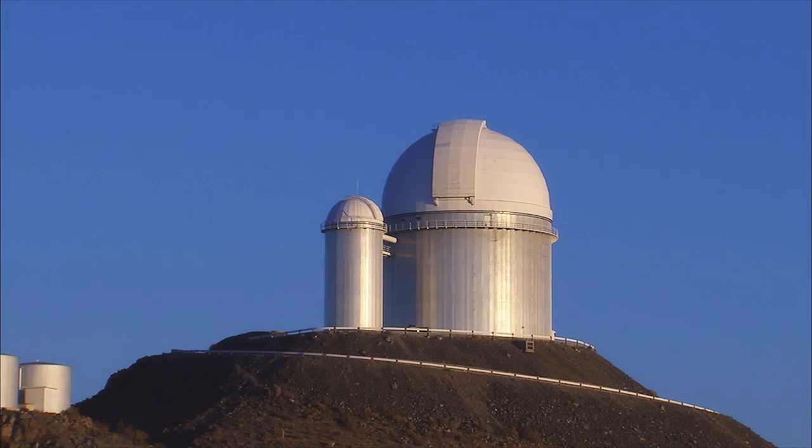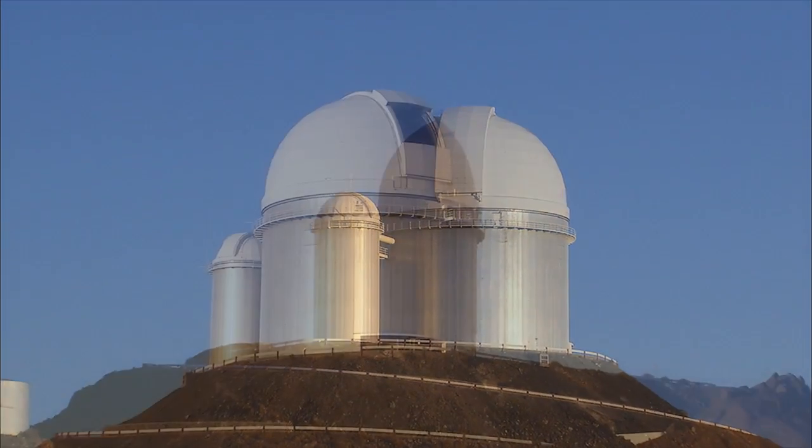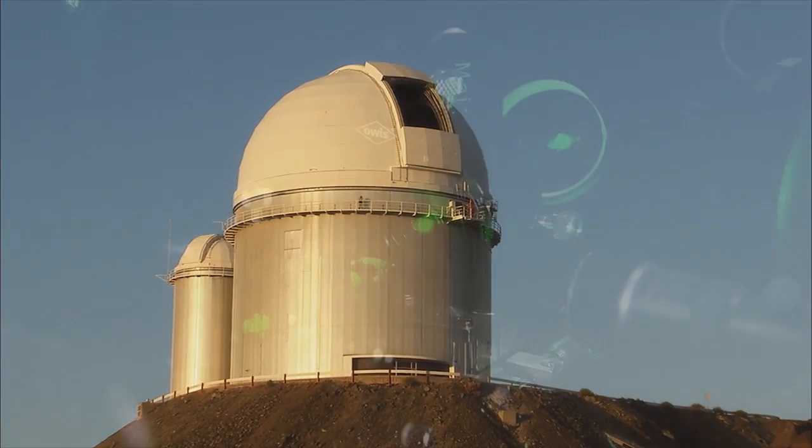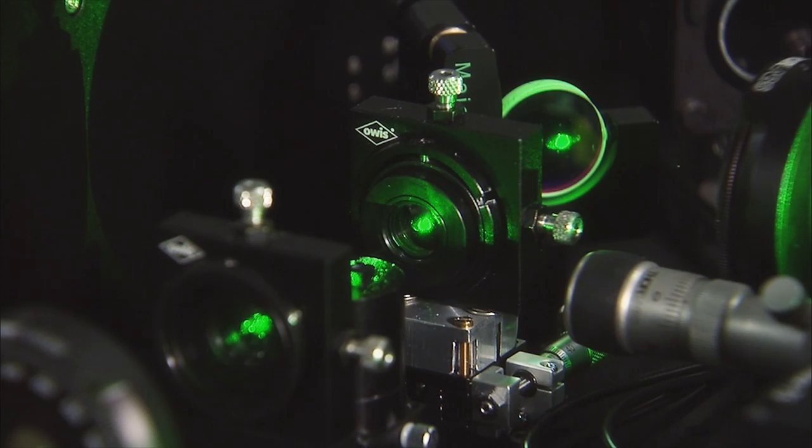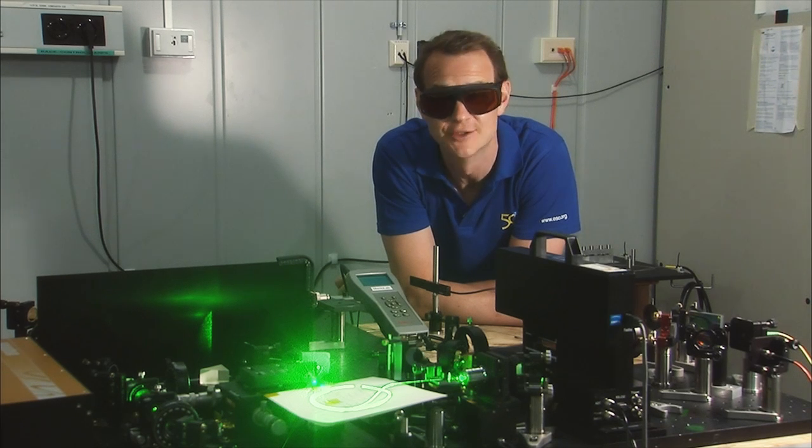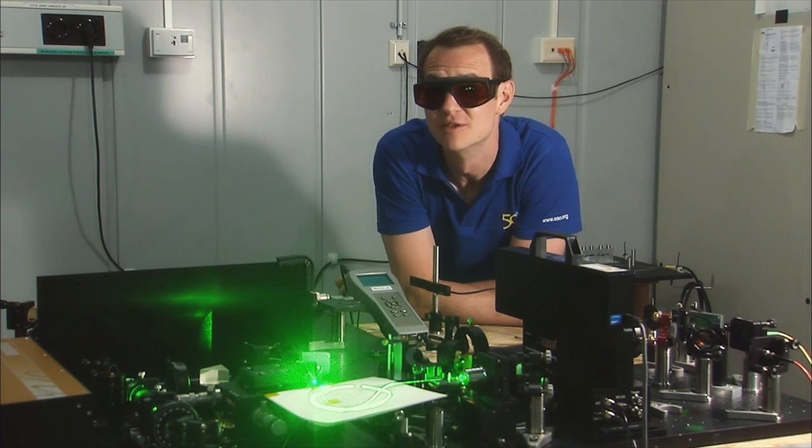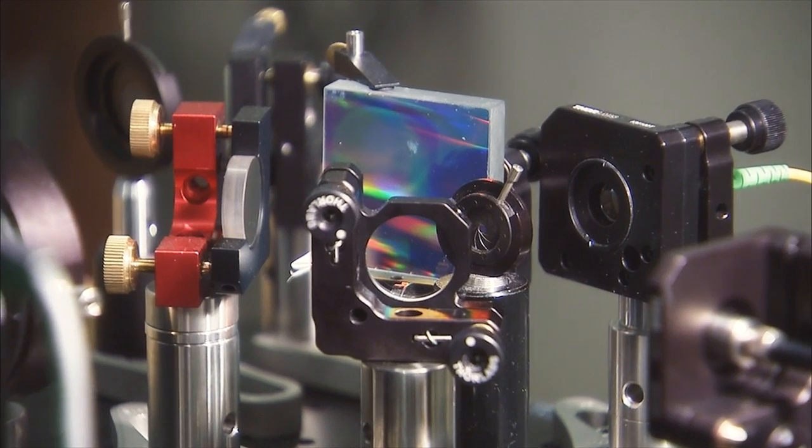ESO's venerable 3.6-metre telescope is also hunting for exoplanets. The HARPS spectrograph is the most accurate in the world. So far, it's discovered more than 150 planets.